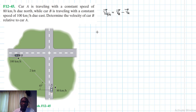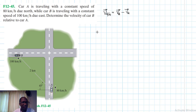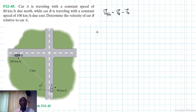V_A and V_B are absolute velocities because they are being observed from a fixed reference frame. V_B/A, the velocity of Car B relative to Car A, is a relative velocity because it is being observed from a translating reference frame.